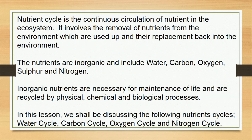Nutrient circle is the continuous circulation of nutrients in the ecosystem. It involves the removal of nutrients from the environment, which are used up, and their replacement back into the environment. The nutrients are inorganic and include water, carbon, oxygen, sulfur, and nitrogen.